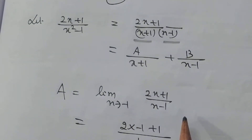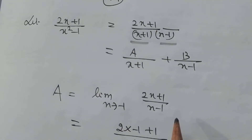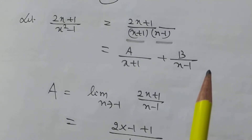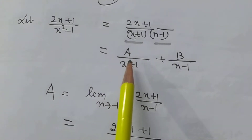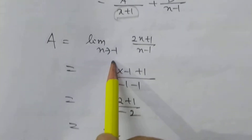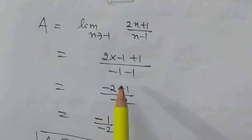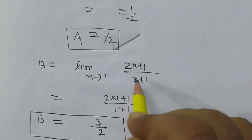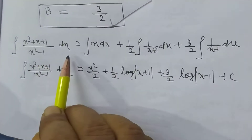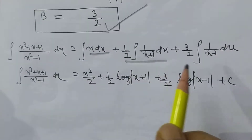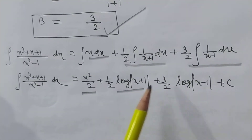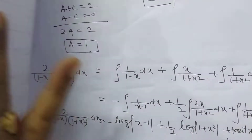We apply the limit method to find coefficients a and b. Writing (2x + 1)/[(x + 1)(x - 1)] = a/(x + 1) + b/(x - 1). For a: limit as x → -1, a = (2x + 1)/(x - 1) = (-2 + 1)/(-1 - 1) = 1/2. For b: limit as x → 1, b = (2x + 1)/(x + 1) = 3/2. So ∫(x³ + x + 1)/(x² - 1) dx = ∫x dx + ½ ∫1/(x+1) dx + (3/2) ∫1/(x-1) dx = x²/2 + ½ log|x+1| + (3/2) log|x-1| + c.